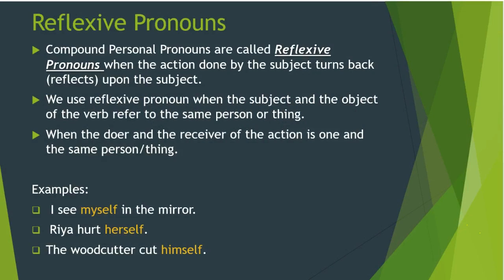In our previous session of reflexive and emphatic pronouns, we covered that when the action done by the subject turns back upon the subject himself, the pronoun used is called a reflexive pronoun. That is, when the doer of the action and the receiver of the action are one and the same person, a reflexive pronoun is used. Example: 'I see myself in the mirror' — the action is 'see', and the one doing and receiving the action is 'I', so 'myself' is a reflexive pronoun.